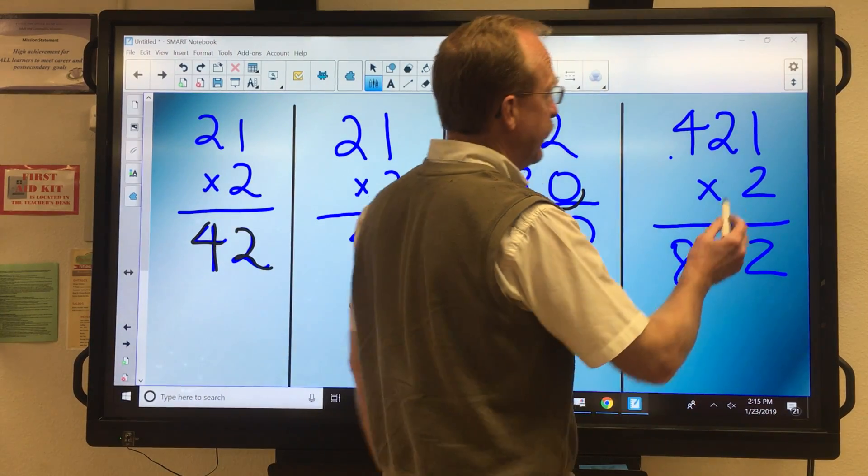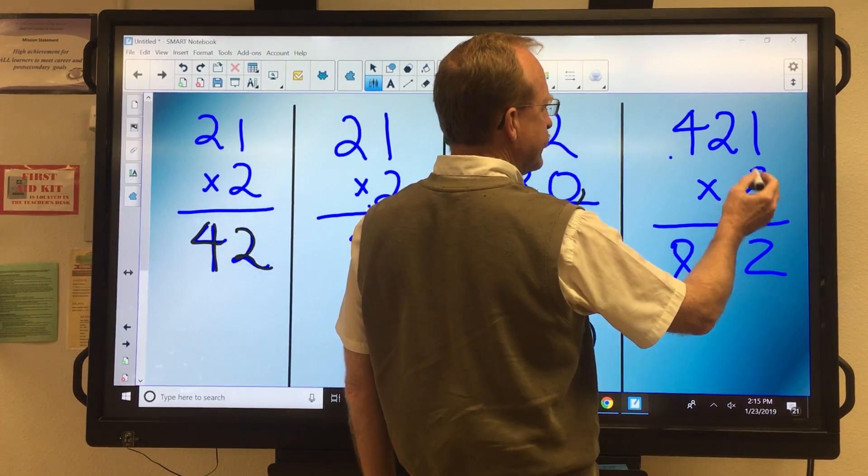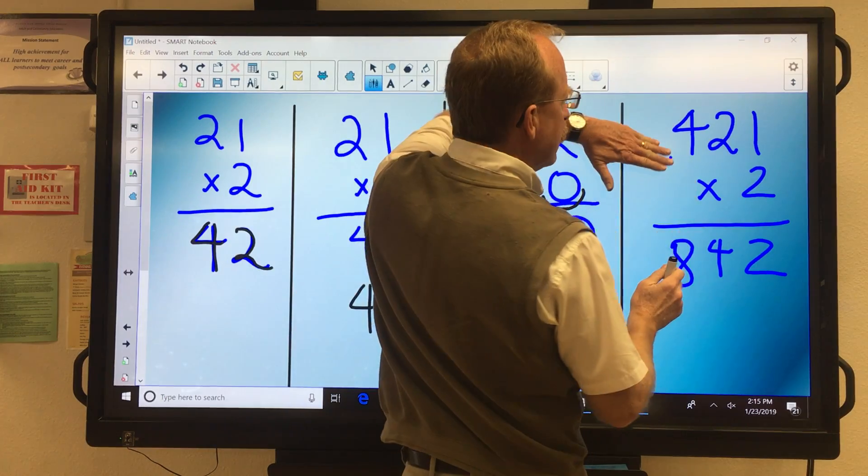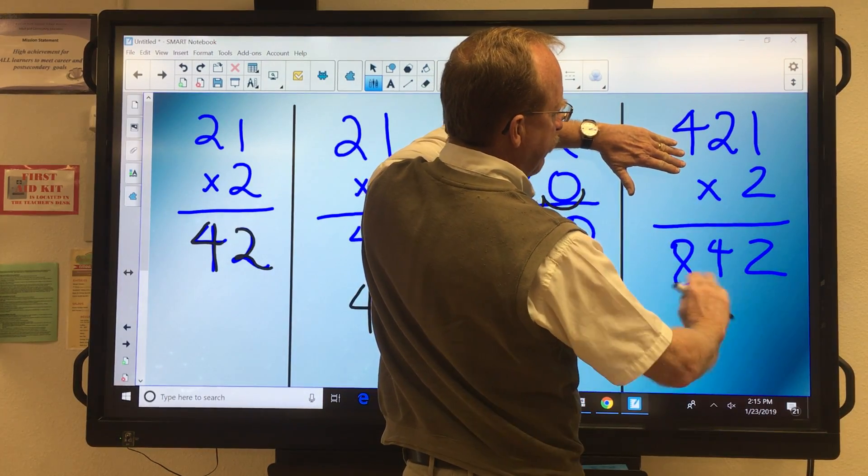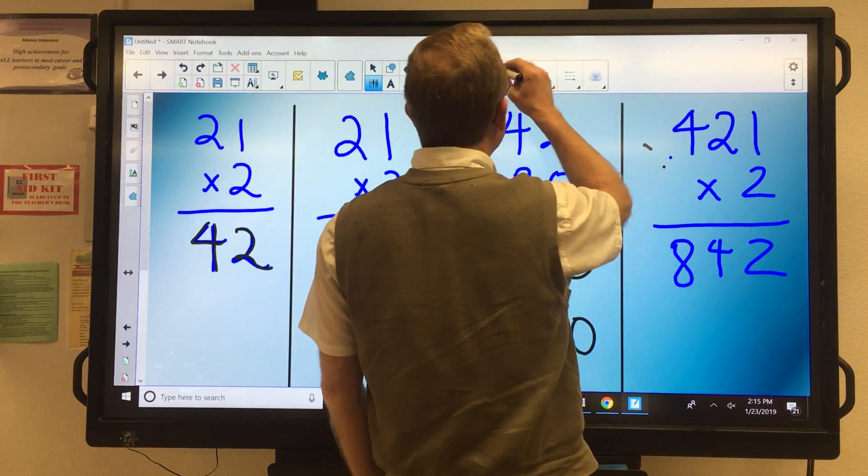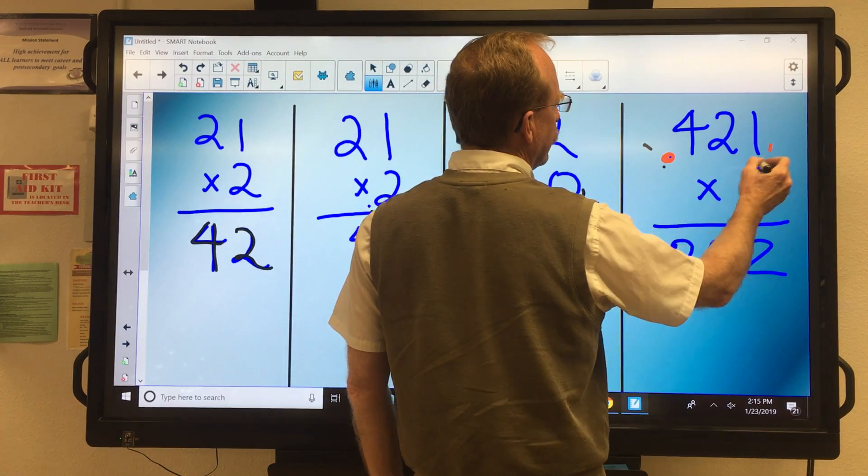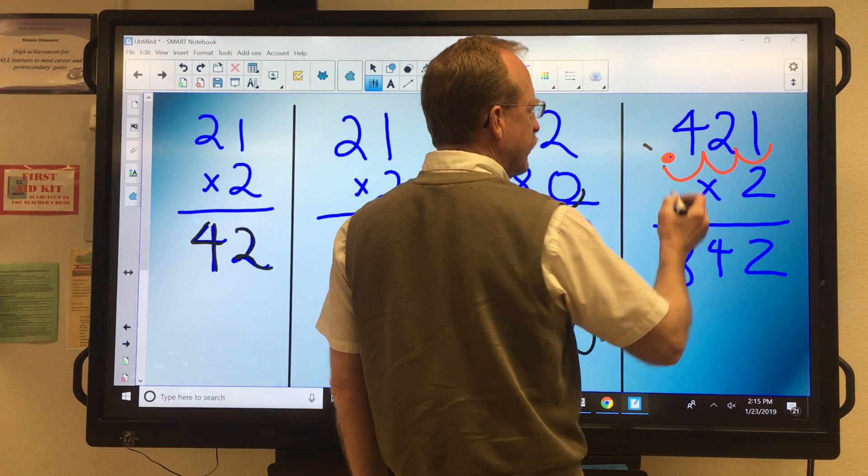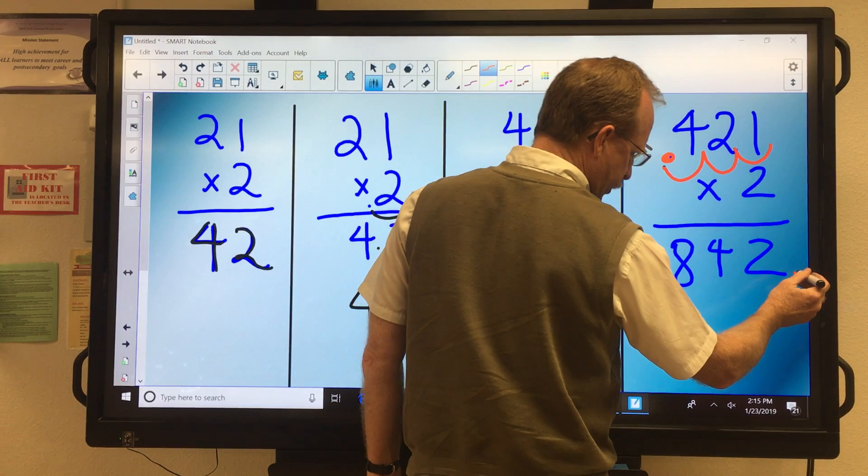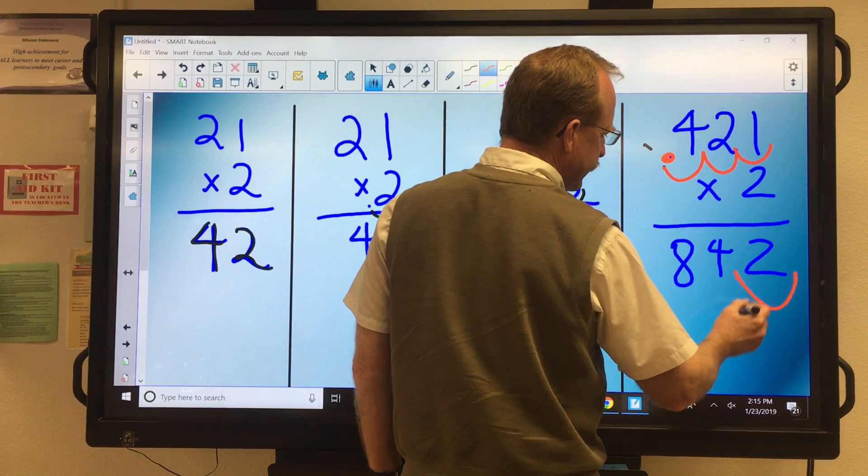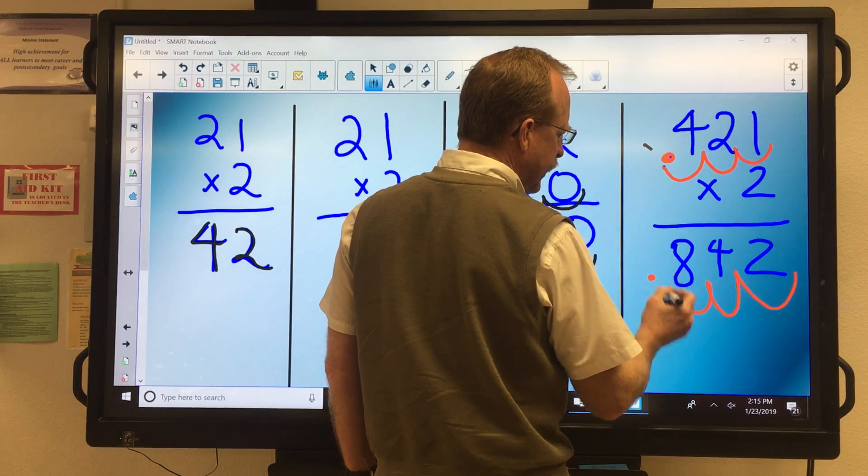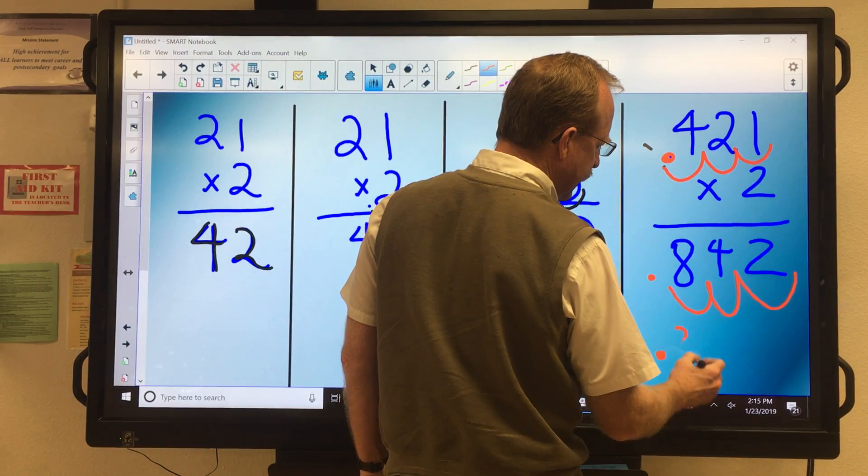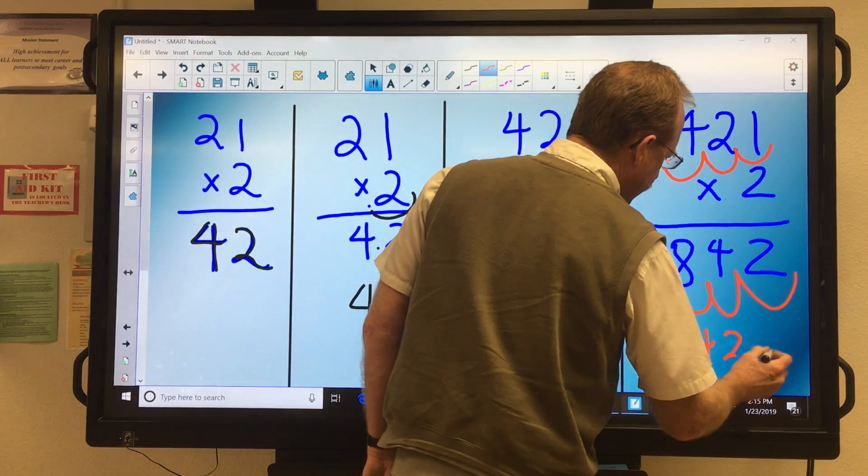Here I have 3, I have .421 times 2. I just ignore the decimal when I'm multiplying, I come up to 842, and then I see that the decimal is 1, 2, 3 spots over, so I start from the left, 1, 2, 3, final answer, .842.